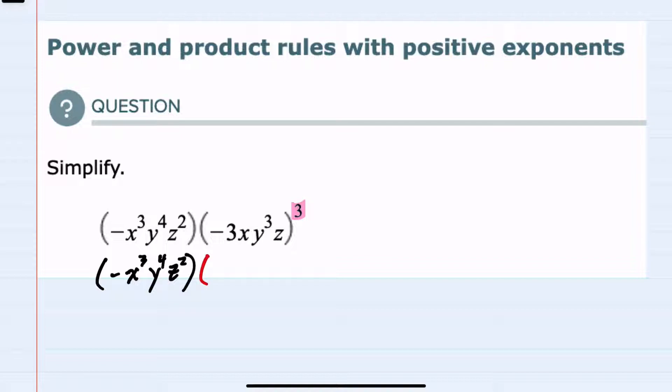Since everything is being raised to the third power, I have the number negative 3 raised to the third power. So that's negative 3 times negative 3 times negative 3, which would be a negative 27, and then this x is being raised to the third power.